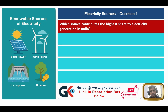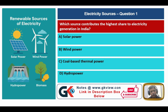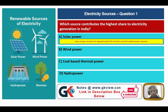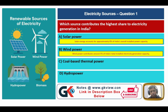Option A: solar power. Option B: wind power. Option C: coal-based thermal power. Option D: hydro power. Let us see all the options one by one. Solar energy accounts for approximately 8% of India's overall installed power capacity. Wind power contributes around 5% of India's total installed electricity generation capacity.